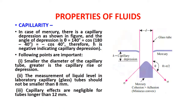For mercury, which is denser than water, the level is lowered — this is capillary depression. The mercury level drops below the general level. If the angle of depression theta is 140°, we write cos(140°) = cos(180° − 40°) = −cos(40°), giving a negative value of h, which indicates capillary depression.